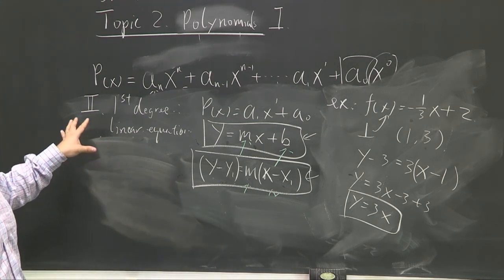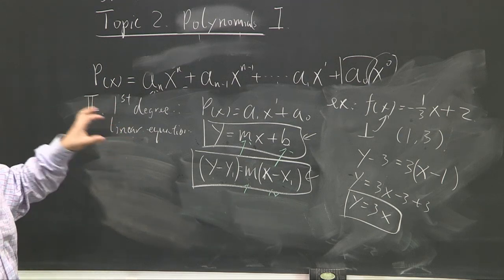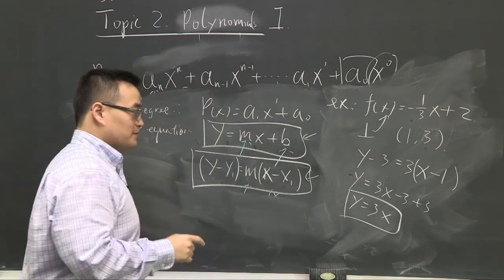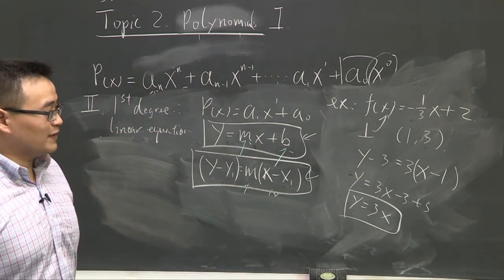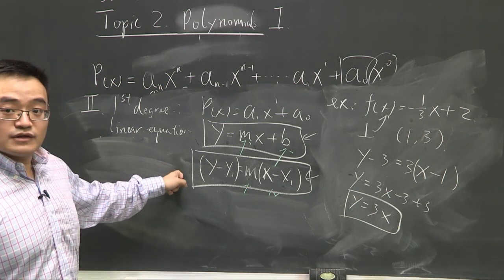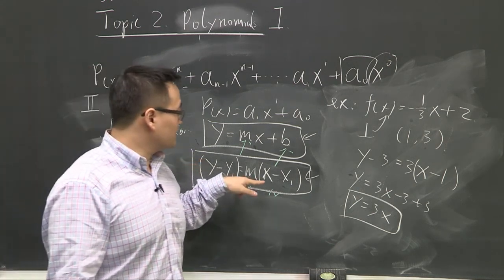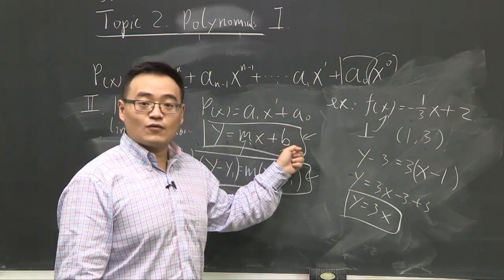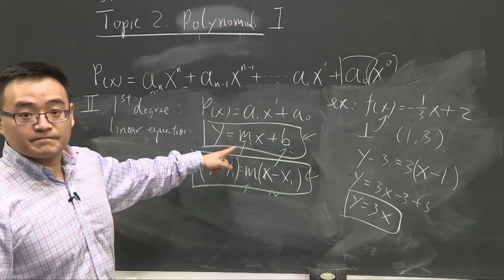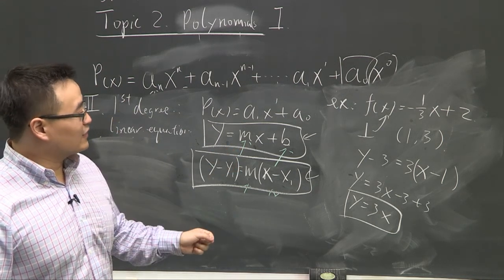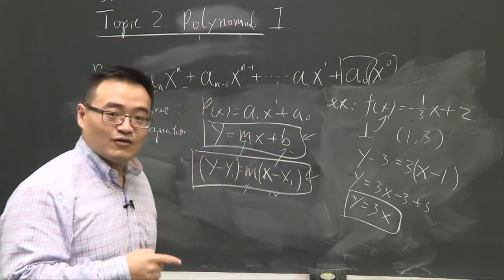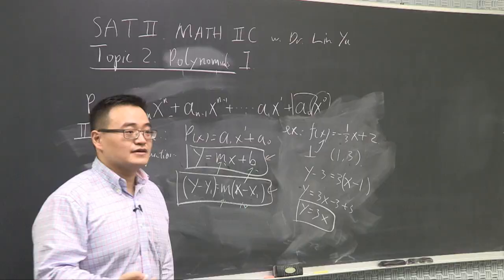So what we did is cover two of the most straightforward polynomials: a zero degree polynomial and a first degree polynomial. Make sure you know the slope-point form, because you're often given a point and the slope rather than the y-intercept — so always be able to use this and convert back. In the next lecture, we're going to expand and talk about second degree polynomials.